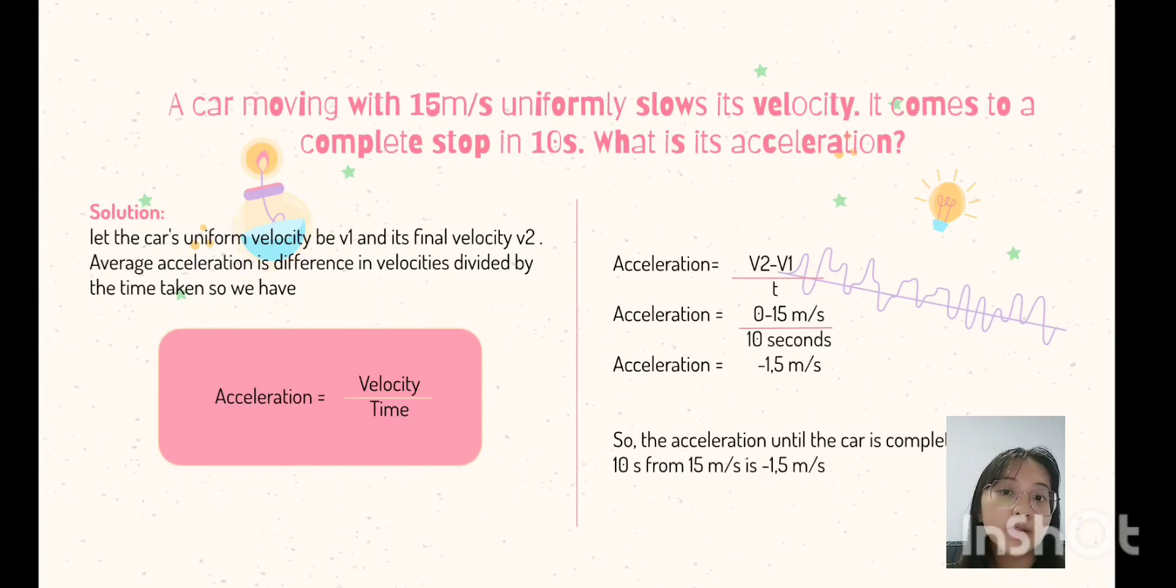So, we have acceleration equals V2 minus V1 divided by the time taken. So, we have minus 1.5 meters per second. So, the acceleration until the car is completely stopped in 10 seconds from 15 meters per second is minus 1.5 meters per second. It changes its direction. That's why the acceleration is a negative number.